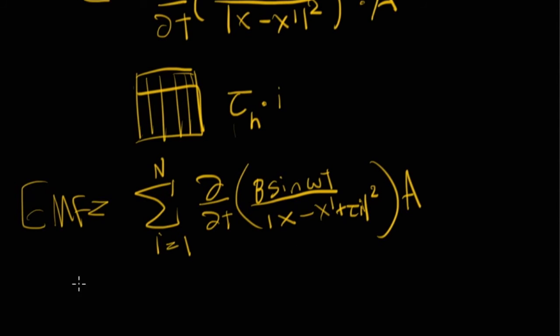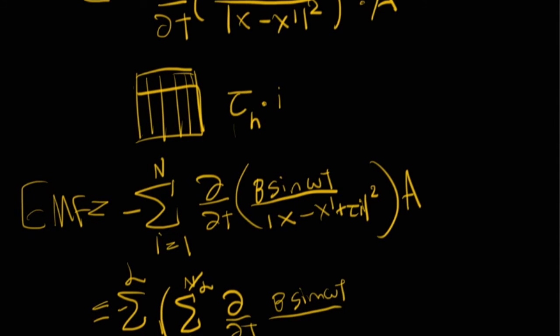So we can write this as two sigmas. Sigma of the layers of the coils, i starts as one as usual. Sigma n over layers, we'll use L as the layers. d/dt, actually I forgot one thing, it should be negative sign in front. B sine omega t over |x minus x dash plus tau i|, all of that times tau times i plus the area.